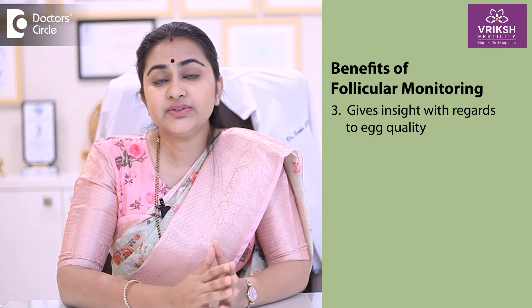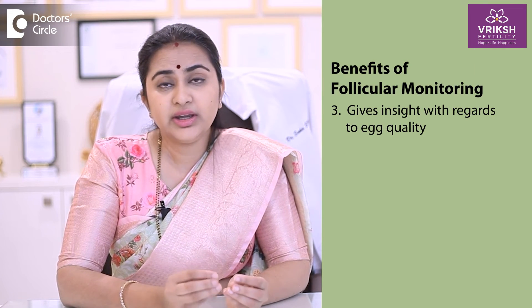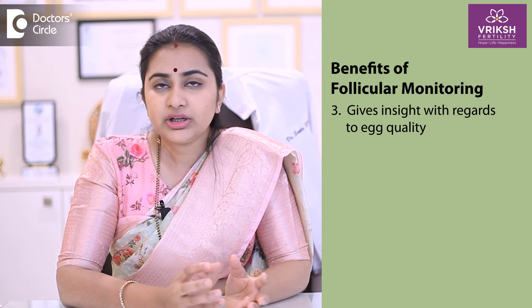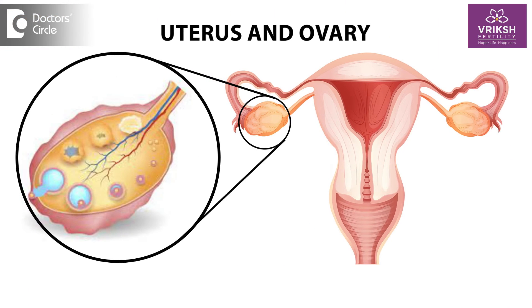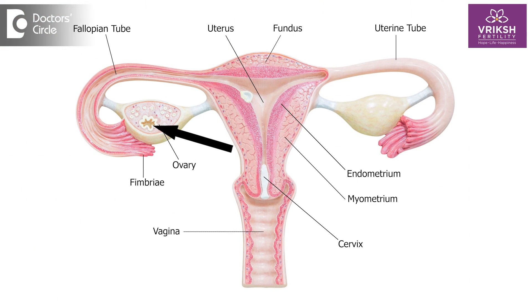Number three, it gives us an insight with regards to egg quality. If the follicle is growing well, the size, the growth, and the blood flow around the follicle gives us an idea whether there is a mature egg which is going to be present inside the follicle or not.